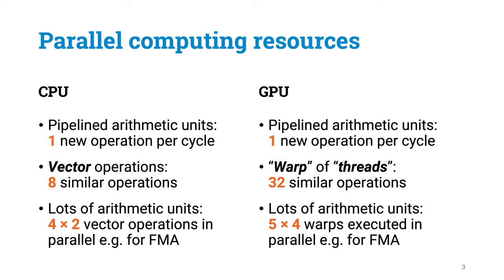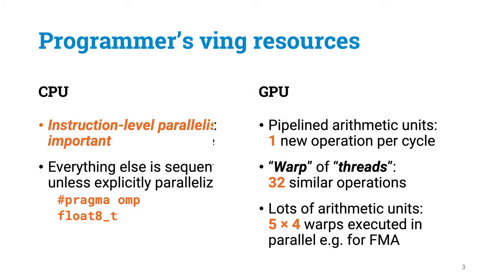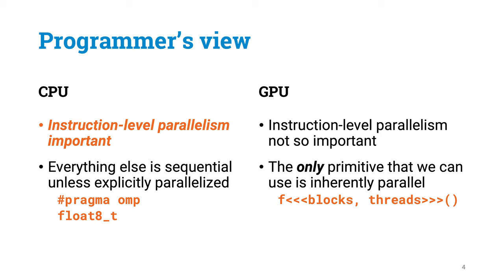We have learned about two different kinds of processors that we have in all computers these days. There is the CPU, that has got multiple parallel arithmetic units that perform vector operations in a pipeline manner. And there is the GPU, where the technical details and terminology is somewhat different, but you got again multiple parallel arithmetic units that perform wide operations in a pipeline manner. We have seen that from the programmer's perspective, these two kinds of processors unfortunately are rather different.